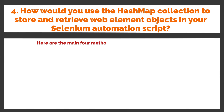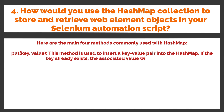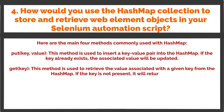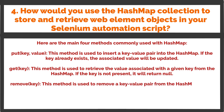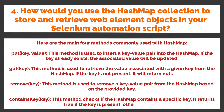Four main methods commonly used with HashMap: put(key, value) — used to insert a key-value pair into the HashMap; if the key already exists, the associated value will be updated. get(key) — used to retrieve the value associated with the given key; if the key is not present, it returns null. remove(key) — used to remove a key-value pair from the HashMap based on the provided key. containsKey(key) — checks if the HashMap contains a specific key; returns true if the key is present, otherwise false.